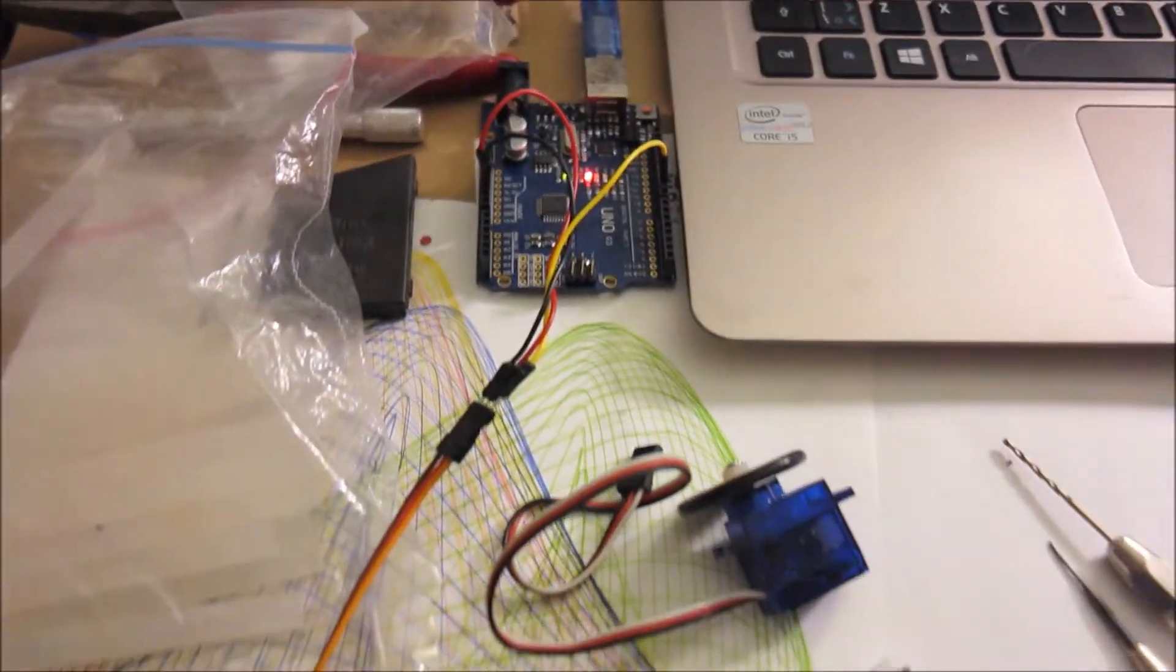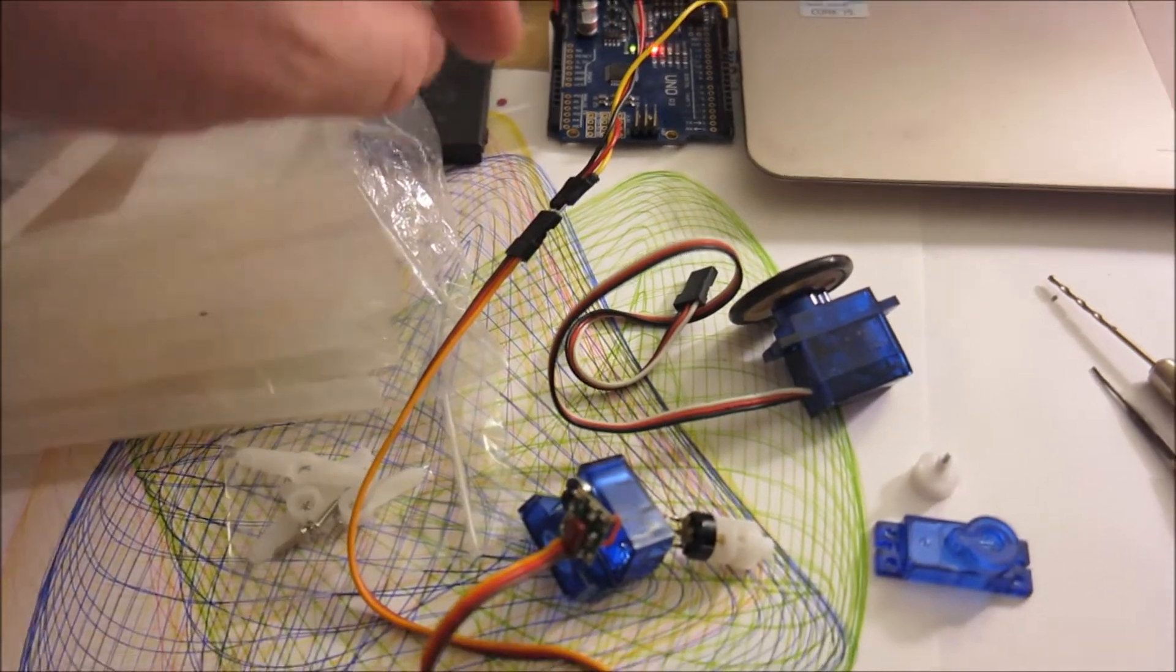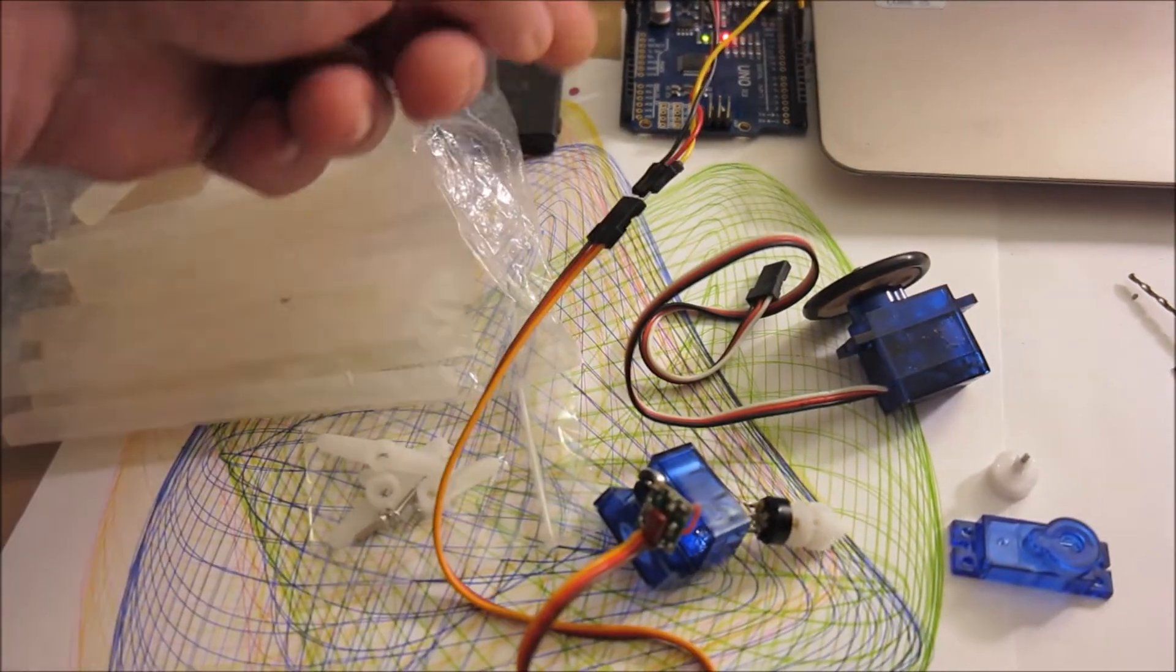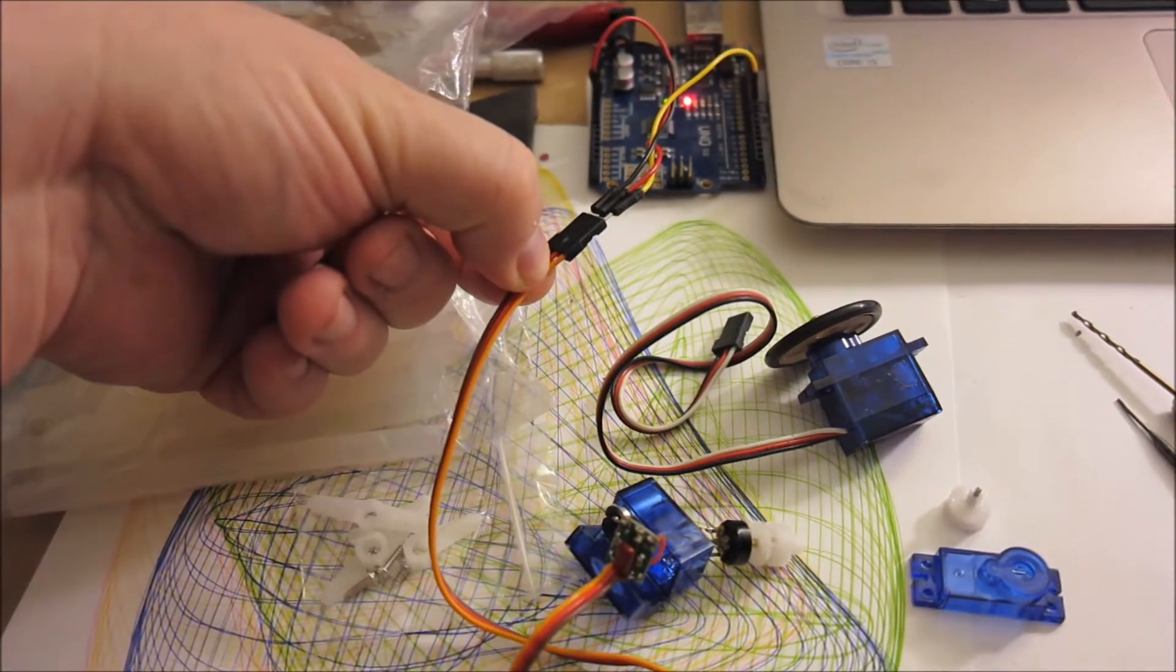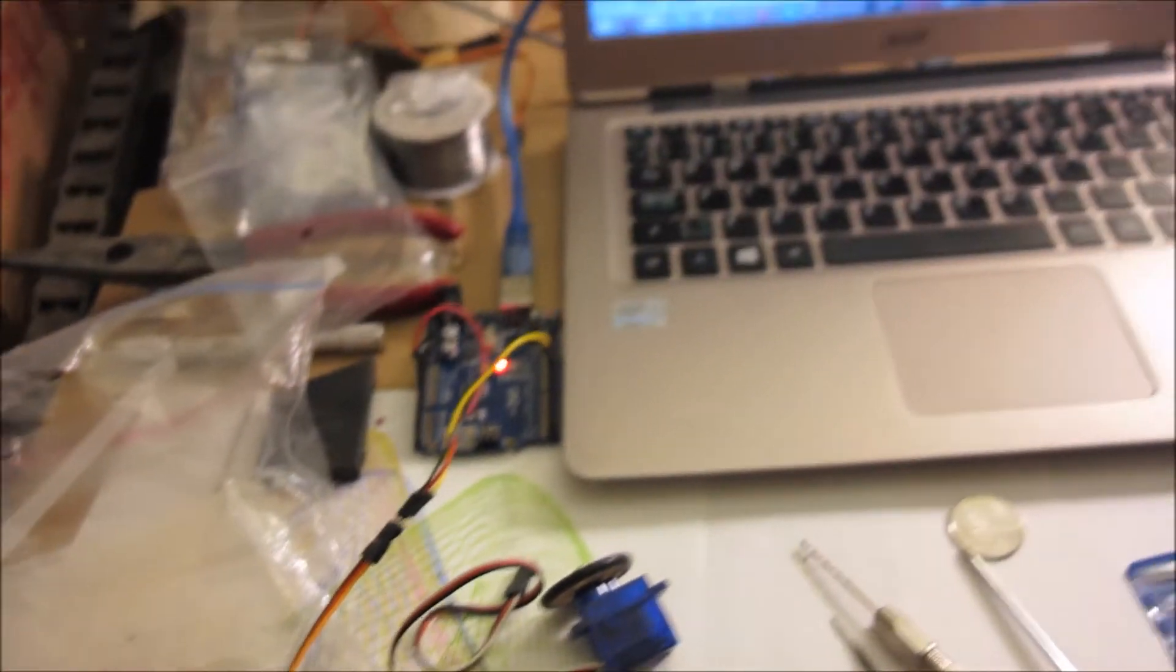Okay, I got the servo connected to the Arduino. The dark color goes to ground, red goes to power, and then the orange or yellow colorful one goes to pin 9.